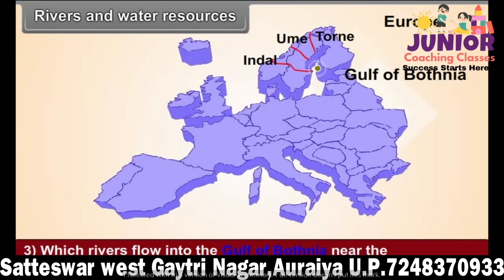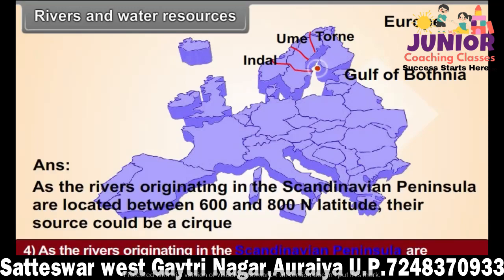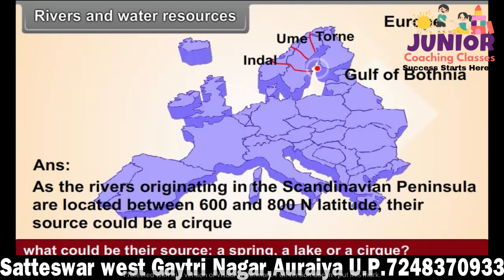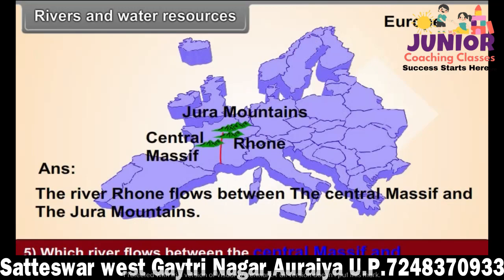Question 5: Which river flows between the Central Massif and Jura mountains? Question 6: Which river basin lies between the Alps and the Apennine mountains? Question 7: Which river basin lies between the Volga highlands and Ural mountains? Question 8: Canals are used for water transport in Europe. Name any four of them.